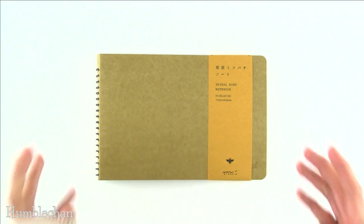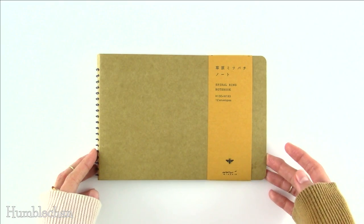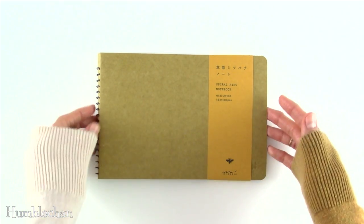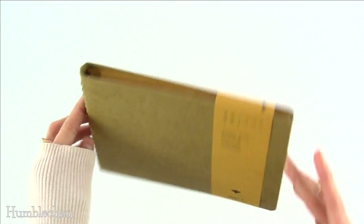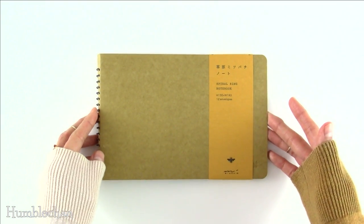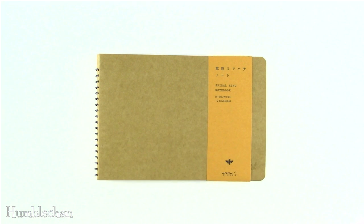Hey, this is Chan. Today I'm here to share this. This is the Midori Spiral Ring Notebook. It's actually not a notebook. It's a spiral-bound book of envelopes, and I got this because I was looking for a way to package up a snail mail gift in a different way.